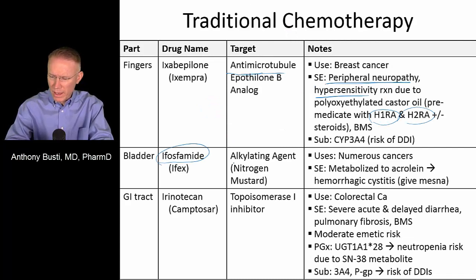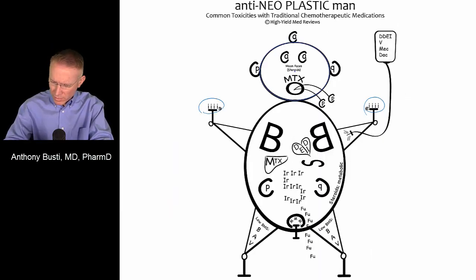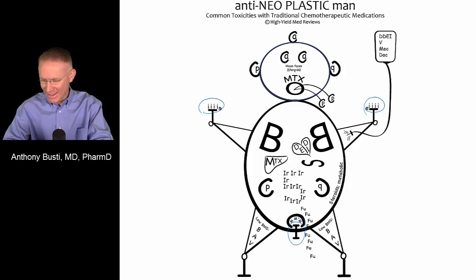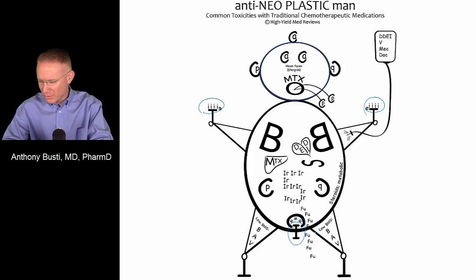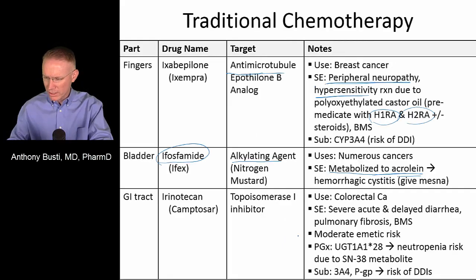Ifosfamide is an alkylating agent that also causes its metabolites to form acrolein, contributing to hemorrhagic cystitis similar to cyclophosphamide. The figure anatomically designates this with the urethra coming out from the bladder — imagining urine being released — but also reflecting the hemorrhagic cystitis that occurs in the bladder. This is another reason for using mesna, similar to cyclophosphamide.